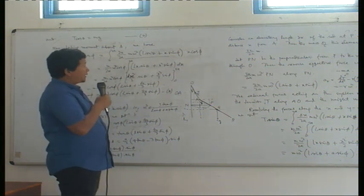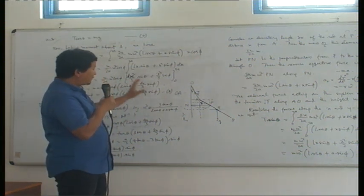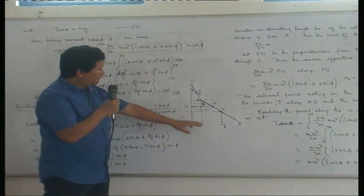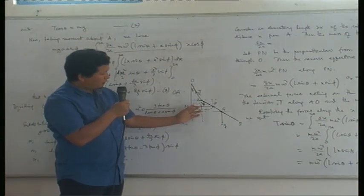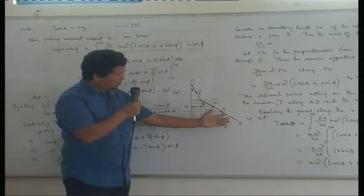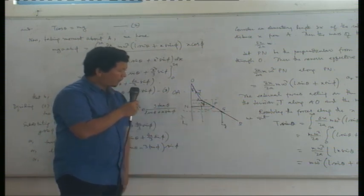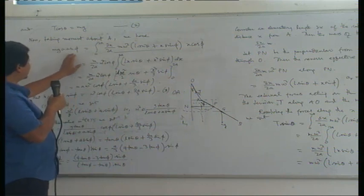By D'Alembert's principle, this force and this effective force taken all over rod AB will be equal. So we have this equation.